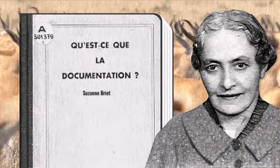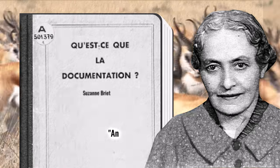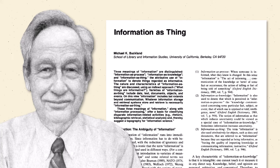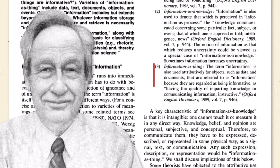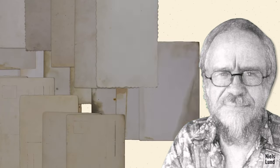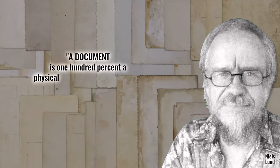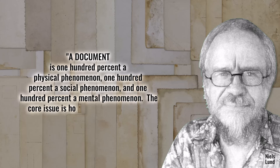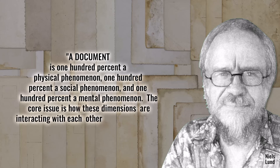Otlet sought a universally accessible global information resource that would prevent human conflict — sadly, his son died in World War I. Later, French librarian Suzanne Briet theorized the nature of modern documents for the first time, arguing that an antelope in the wild is not a document, but an antelope in a zoo is a document on account of its ability to index and inform. Devotees of the neo-documentary turn rally around Michael Buckland's celebrated article 'Information as Thing,' which posits that the most important form of information is a thing or document. Leading neo-documentalist Niels Lund writes: a document is 100% a physical phenomenon, 100% a social phenomenon, and 100% a mental phenomenon — the question is how these dimensions interact with each other in different ways.